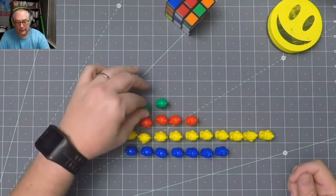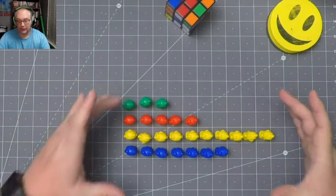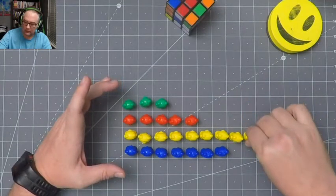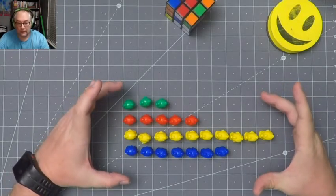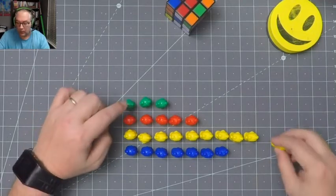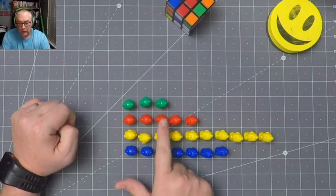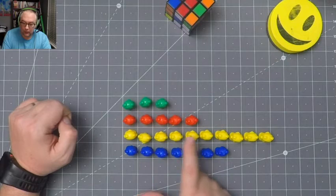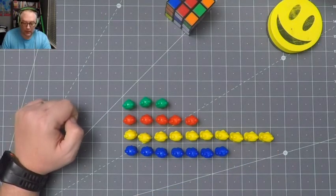So in this data set, because a data set is all of the information put together in this set of data. In this data set or chunk of information, we know a lot about these bears. We know that we have 1, 2, 3, 4, 5, 6, 7, 8, 9, 10 yellow bears.